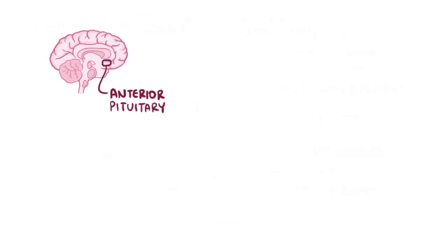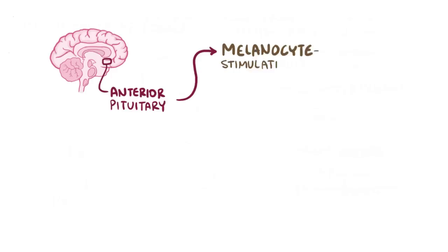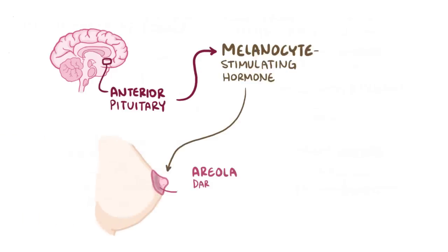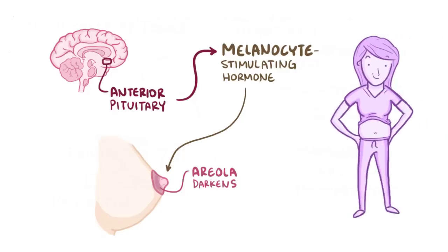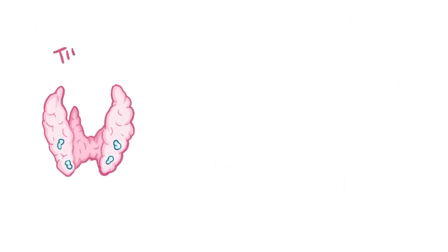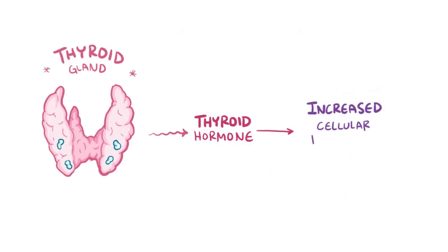The anterior pituitary gland also releases more melanocyte-stimulating hormone, which causes darkening of the areola — the skin around the nipples. The increased melanocyte activity also darkens the normally unseen stripe of fibrous tissue running down the chest and abdomen from the xiphoid process to the symphysis pubis, called the linea alba or white line, transforming it into a darkened line called the linea nigra. Other glands affected by pregnancy include the thyroid gland, which churns out more thyroid hormone to increase the cellular basal metabolic rate in order to meet the demands of the pregnancy.